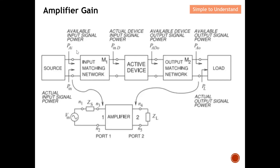This diagram was shown in the Part 9 series discussion on amplifiers. This is the active device — you can imagine it as an amplifier. In order to ensure maximum power transfer from the source to the load, we need to have a matching network — both the input matching network and the output matching network.